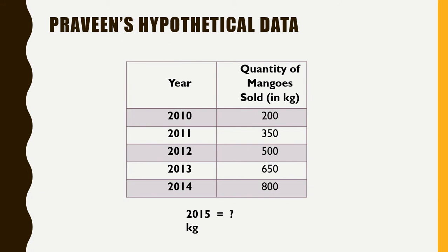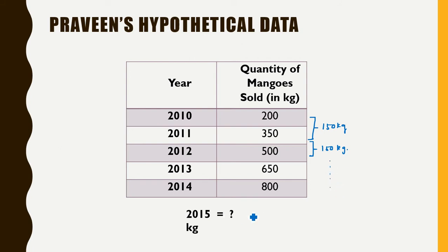Now consider that Praveen has maintained data. He started selling mangoes from the year 2010, when he sold 200 kg, and lately in 2014 he sold 800 kg. Based on this hypothetical data, we can see that the quantity of mango sold increased by 150 kg every year. So if this trend continues, in 2015 the expected sale of mango is going to be 800 plus 150, equal to 950 kg.